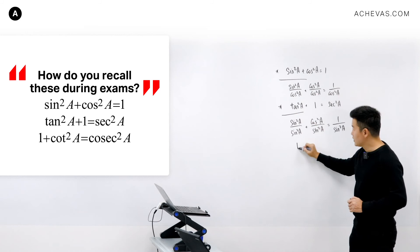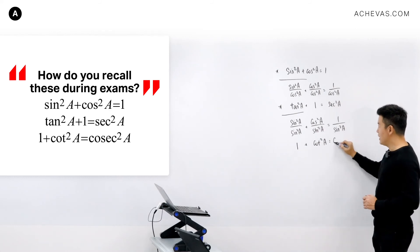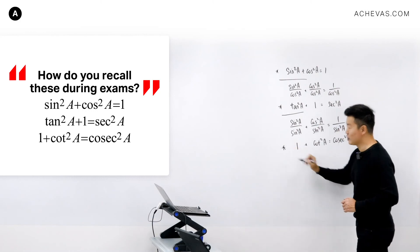sin²A divided by sin²A is 1, and cos²A divided by sin²A is cot²A. 1 divided by sin²A is cosec²A. And this is the third trigonometric identity.